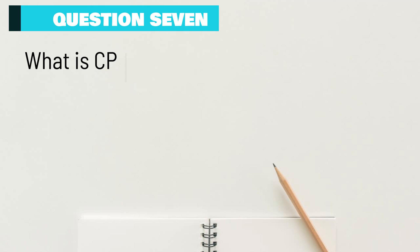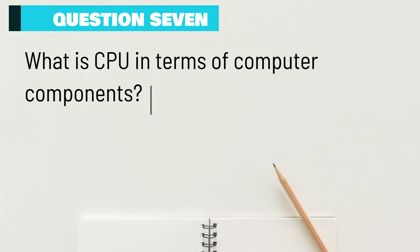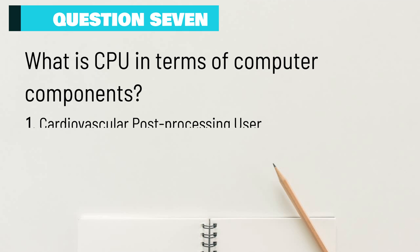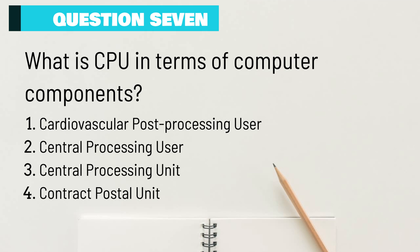Question 7: What is CPU in terms of computer components? A. Cardiovascular Post Processing User. B. Central Processing User. C. Central Processing Unit. D. Contract Postal Unit.